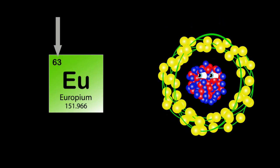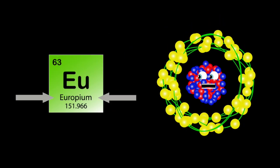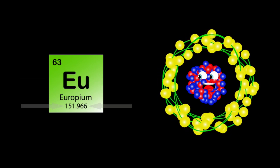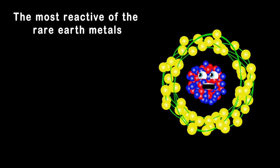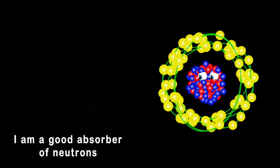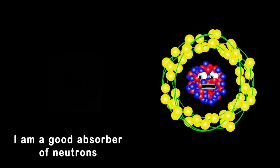My atomic number's 63, I'm europium, my symbol is EU, my atomic mass is 151. I'm the most reactive of the rare earth metals you know, and I'm a good absorber of neutrons, as scientists show.